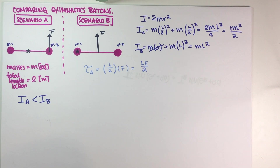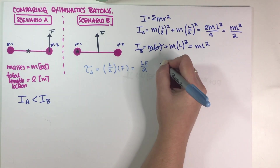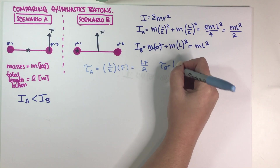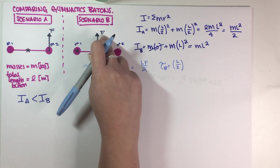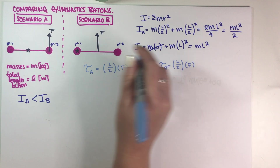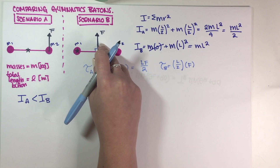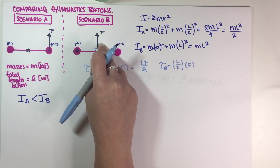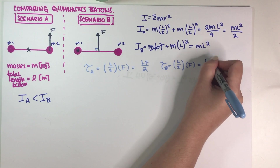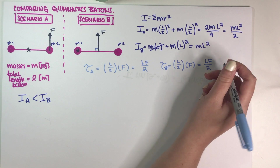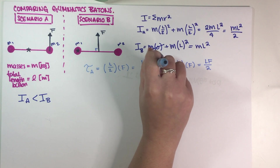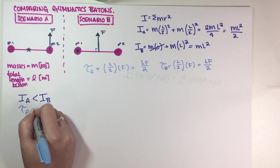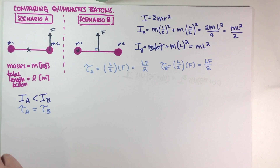For the second scenario, the distance is also L/2 and the force is F. The force and moment arm are perpendicular, so sine of 90 degrees equals 1. This gives torque B equal to LF divided by 2. Both forces are exactly the same per the problem instructions, so the torques are going to be exactly the same. That solves the second part of the problem.